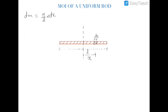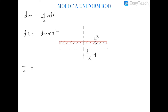The moment of inertia of this small element about the axis is dI = dm·x². The total moment of inertia of the system is I = ∫dm·x². Substituting dm = (m/L)dx, we get I = (m/L)∫x²dx. When applying the limits of x, we should be careful to cover the complete rod.